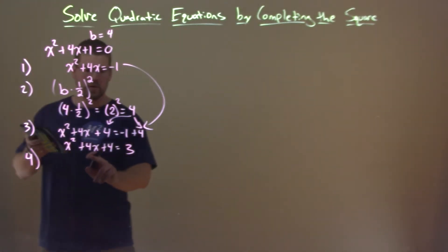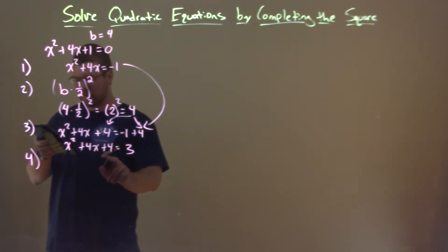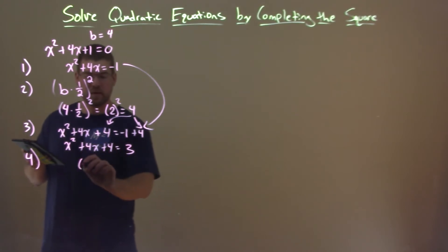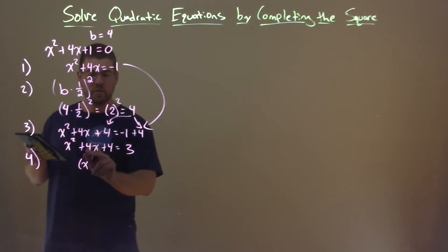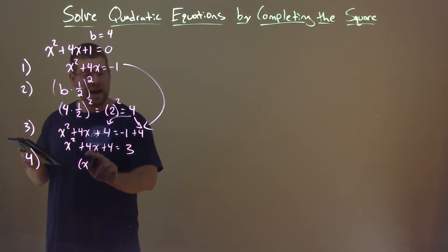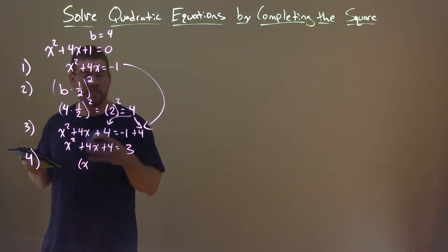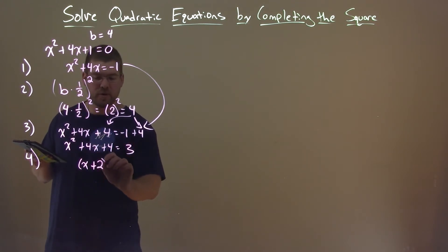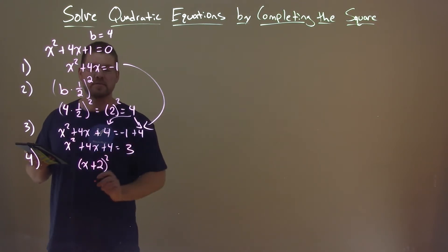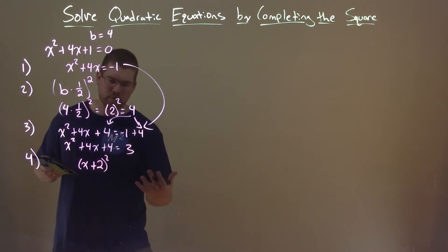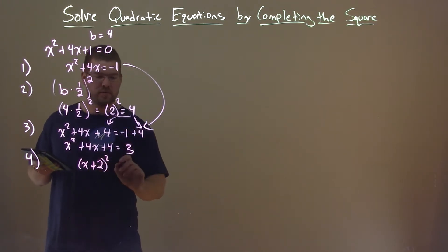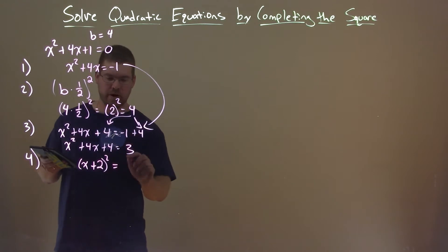What this did for us gets us to our fourth step — it allows us to factor this, creating it as a perfect square. Two numbers that multiply to 4 and add to positive 4 are positive 2. So we write it as x plus 2 squared — x plus 2 times x plus 2 — hence completing the square.